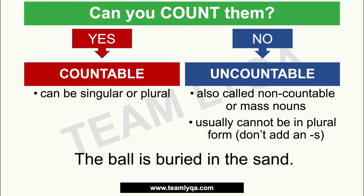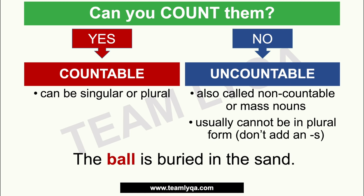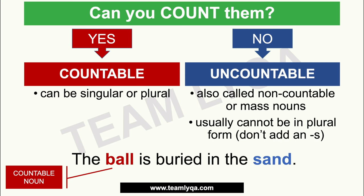In the sample sentence: a 'ball' you can clearly count — you can see one ball — so it's a countable noun. 'Sand,' on the other hand, is too fine and too small to count grain by grain, so that is an uncountable noun. Ball is countable; sand is uncountable.